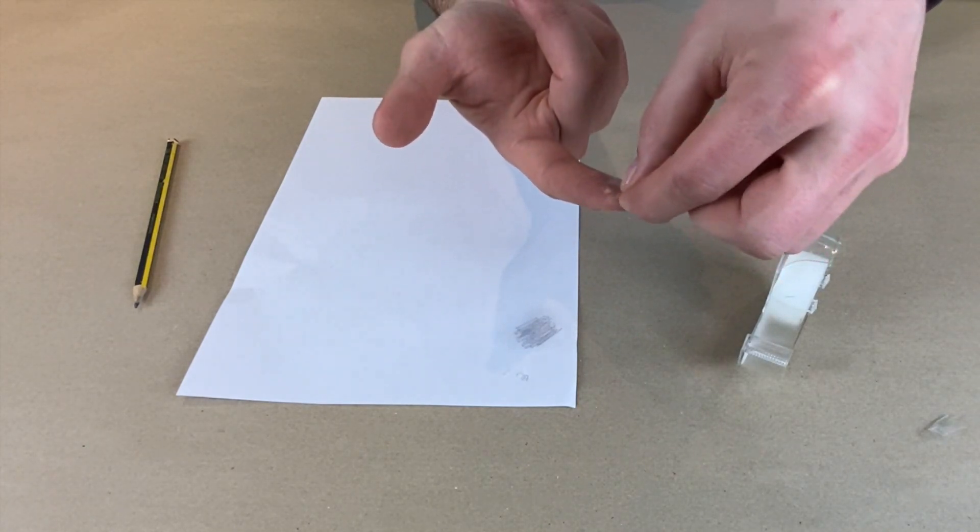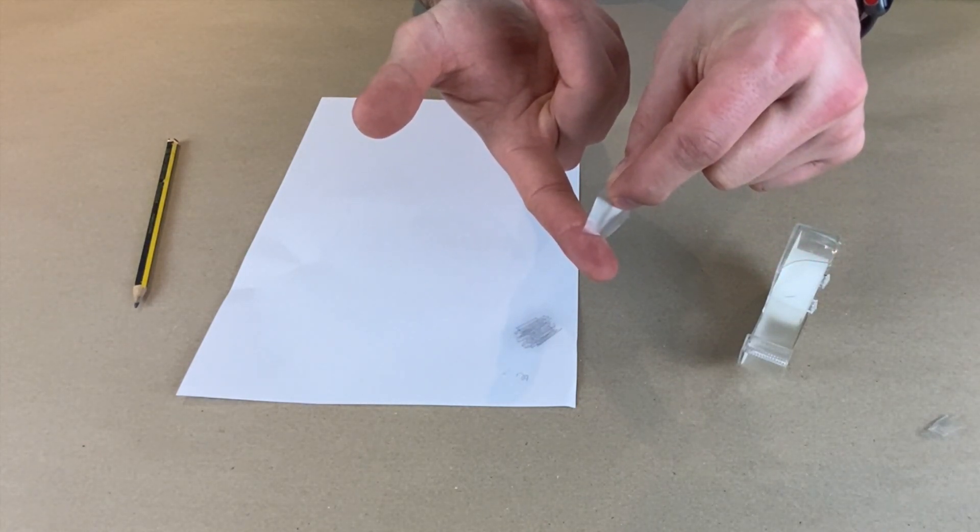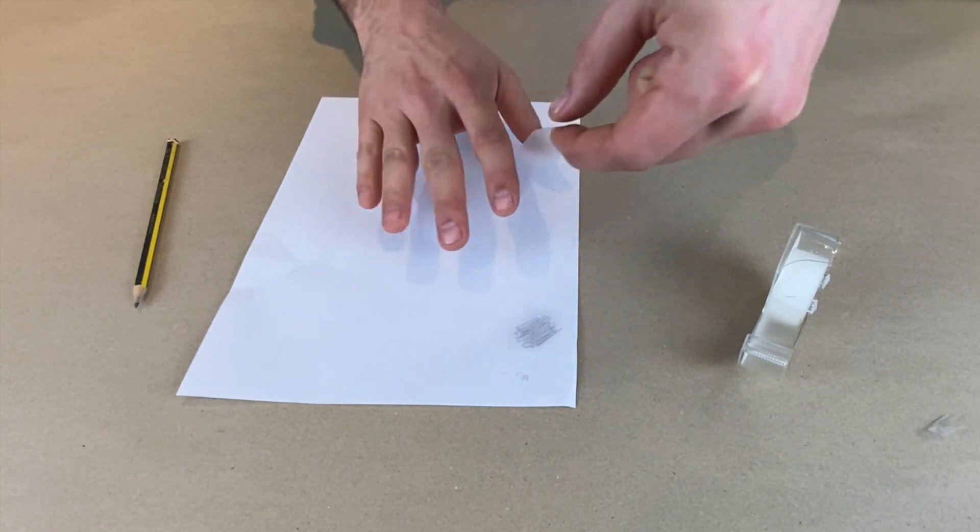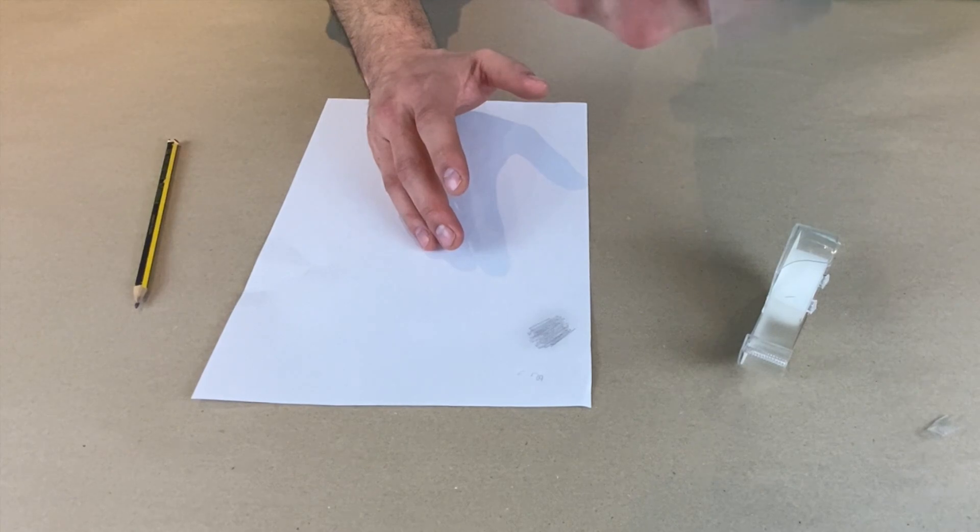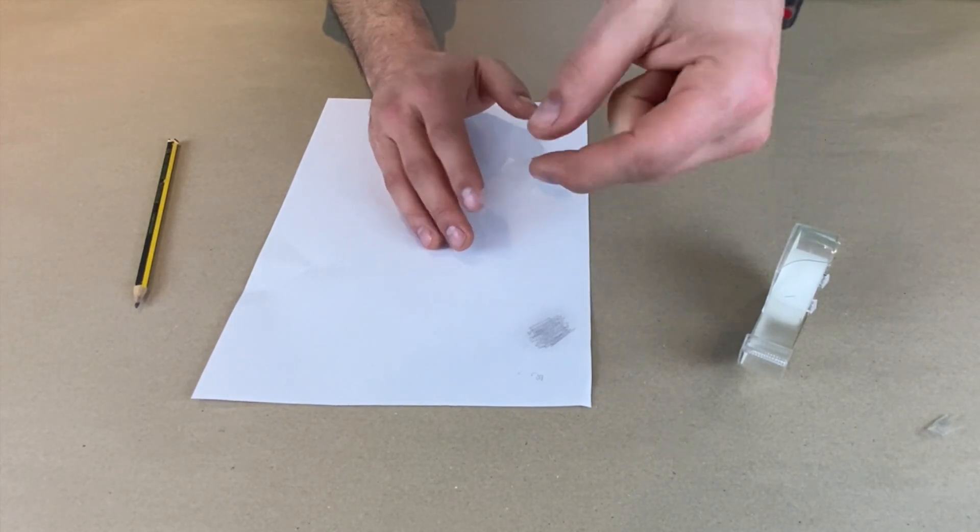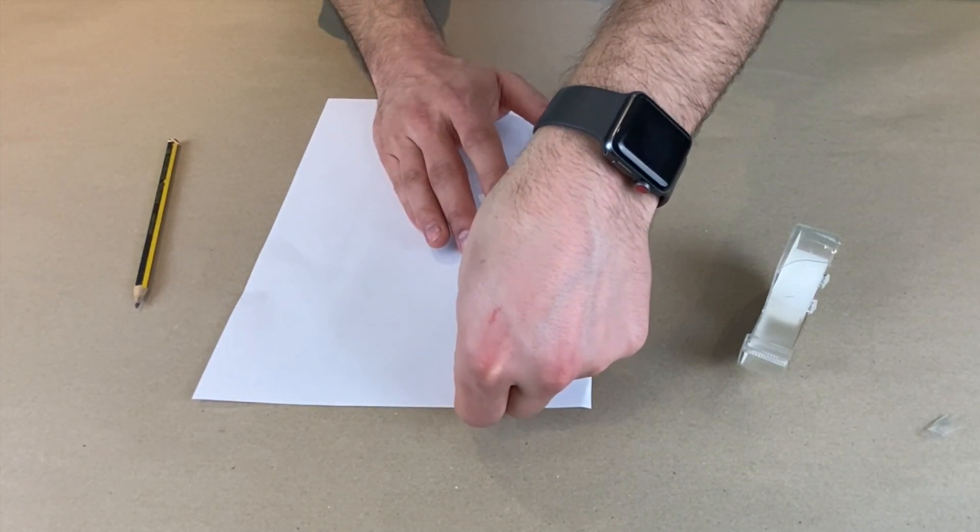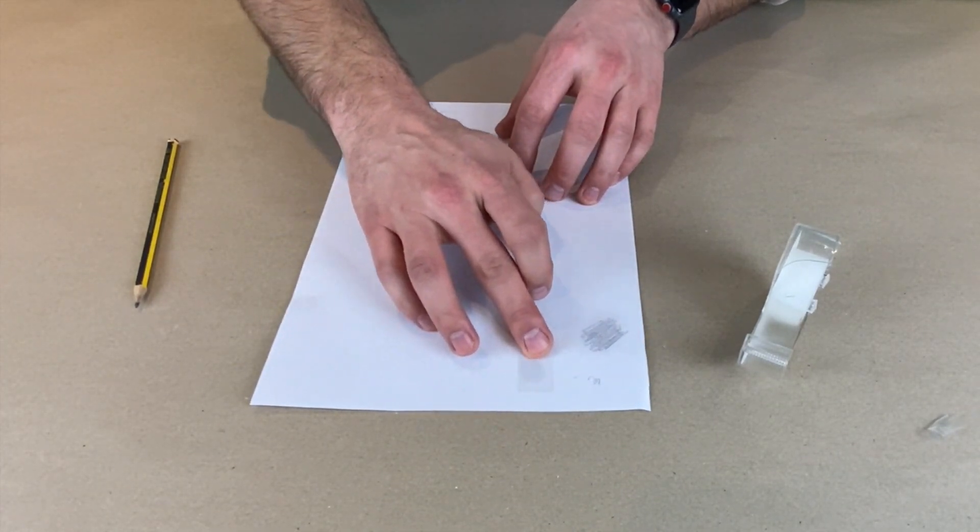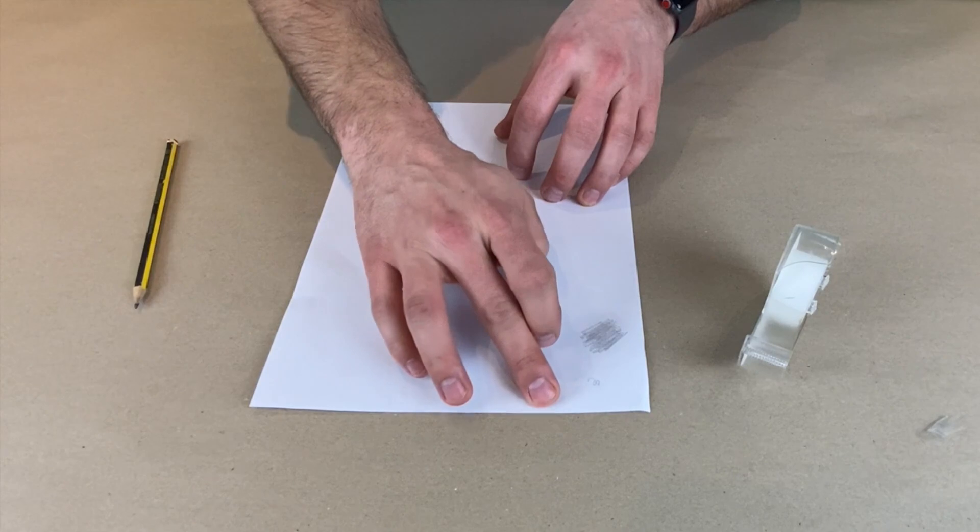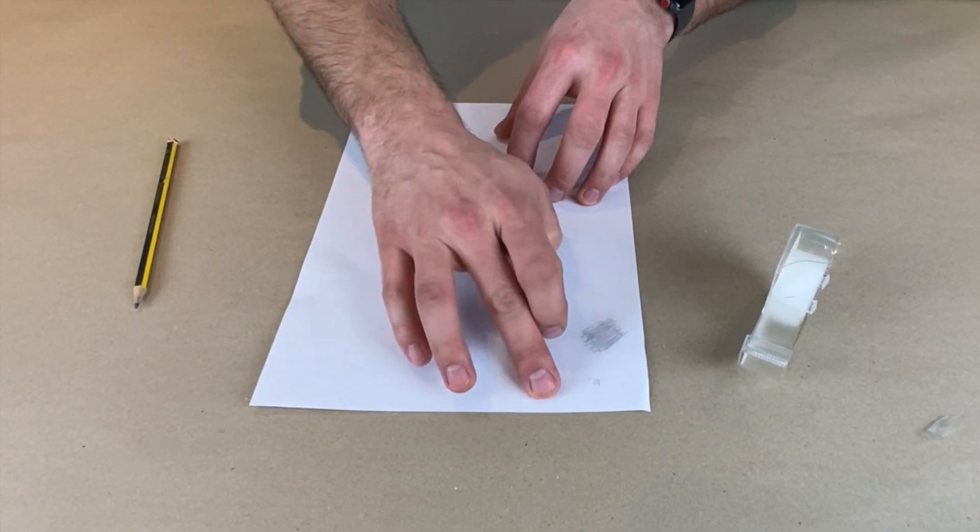And then very carefully rip it off. And you might not be able to see it through there. But if I just put it onto a piece of paper and then squash it down nice and flat, you can hopefully see all of those different lines in a bit more detail.